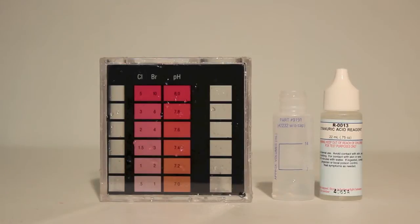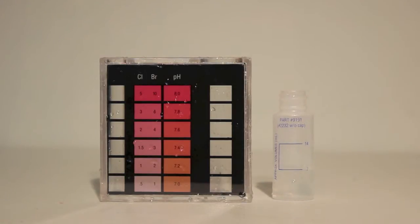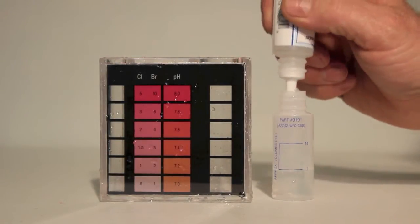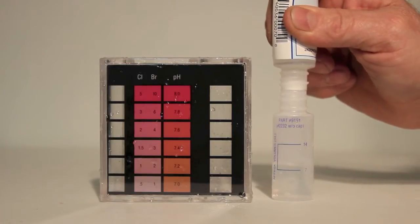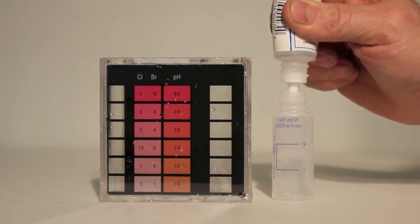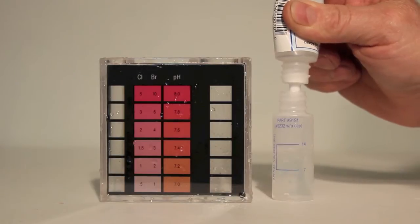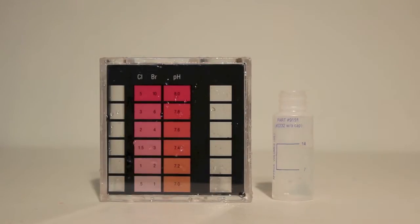Then we'll add that solution to the small cylinder on our comparator test block. And we will fill until we can no longer see the black dot in the bottom of that container from the top.